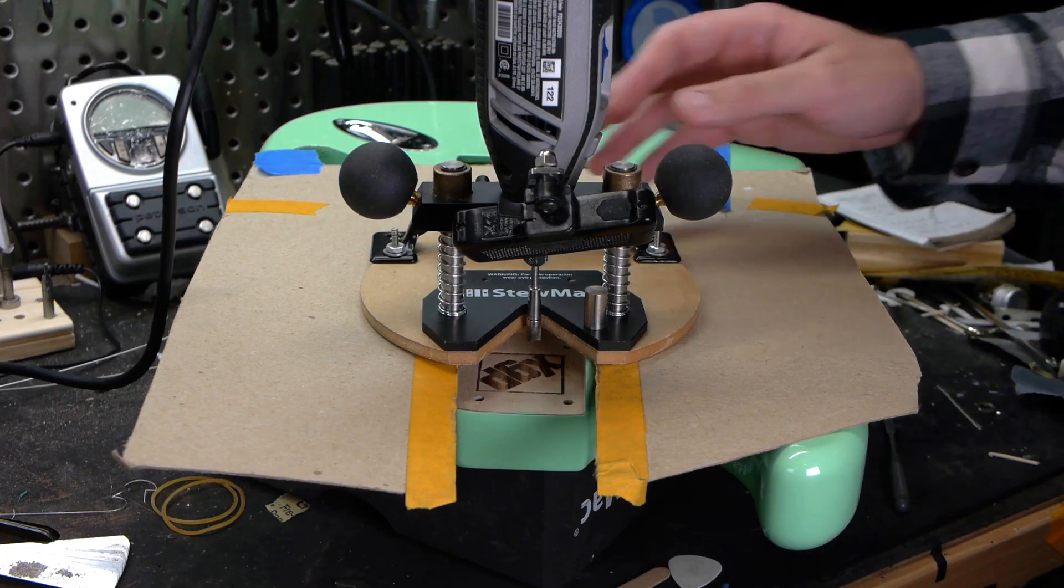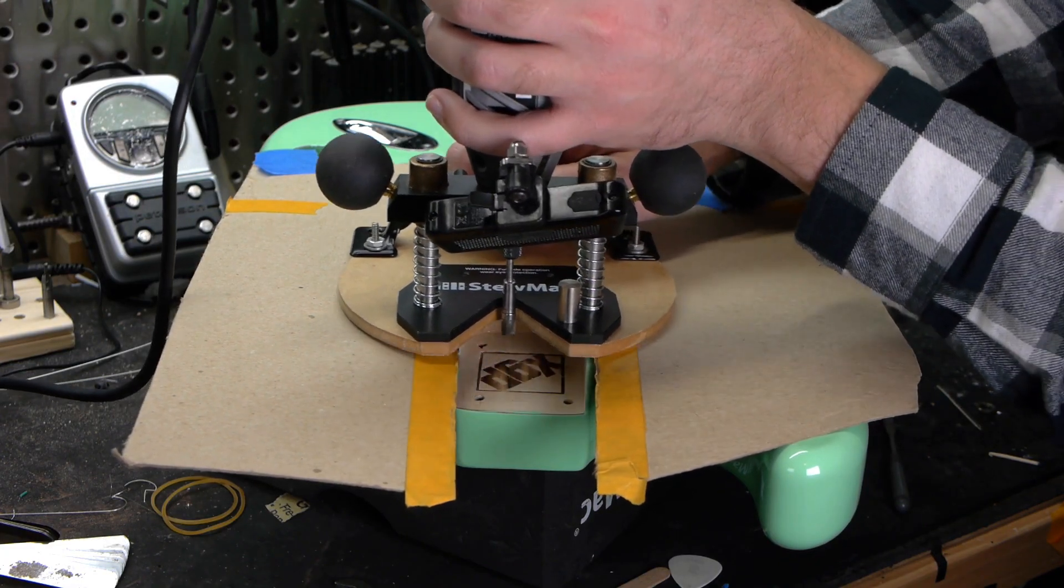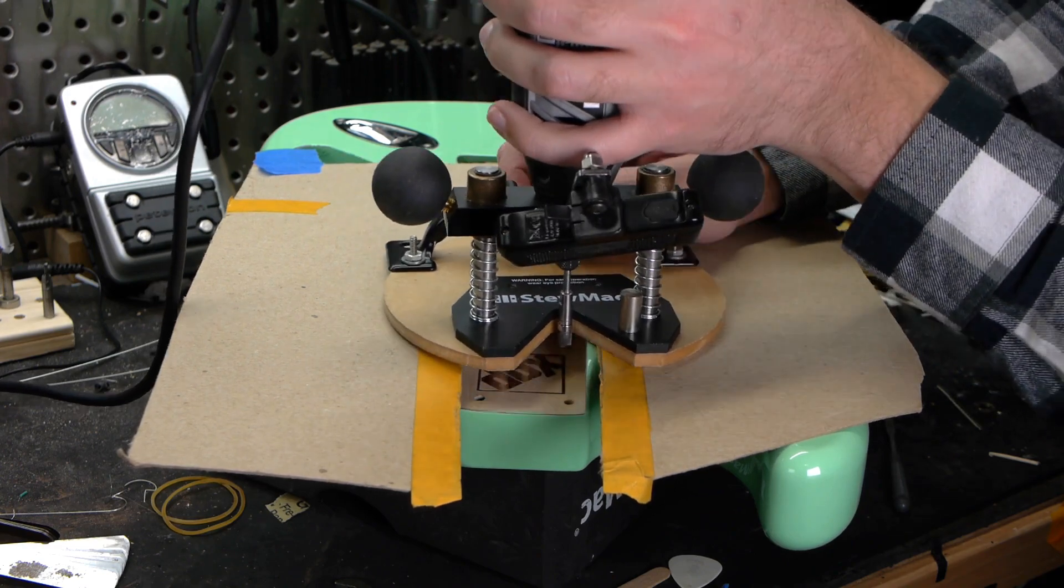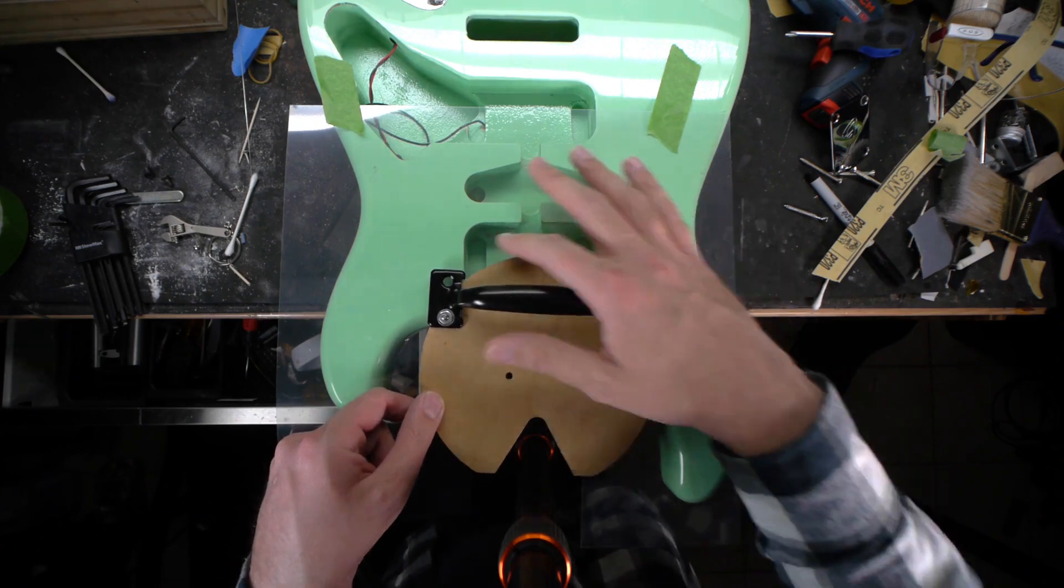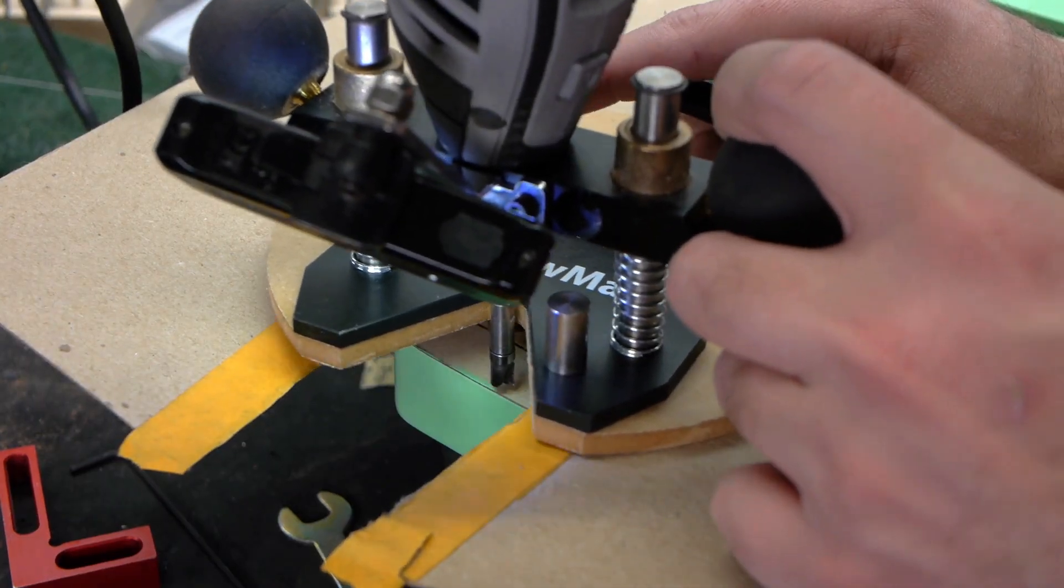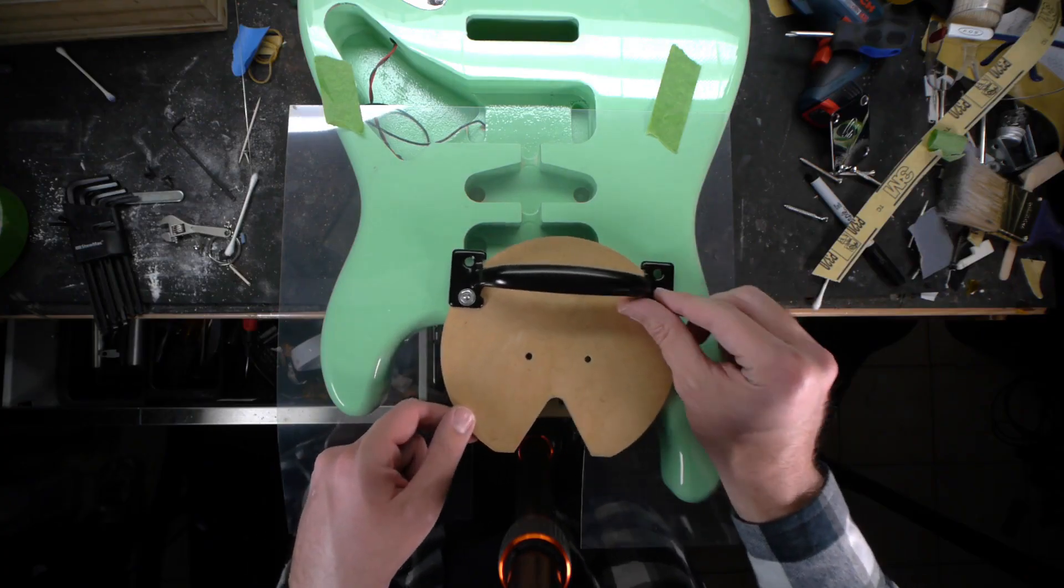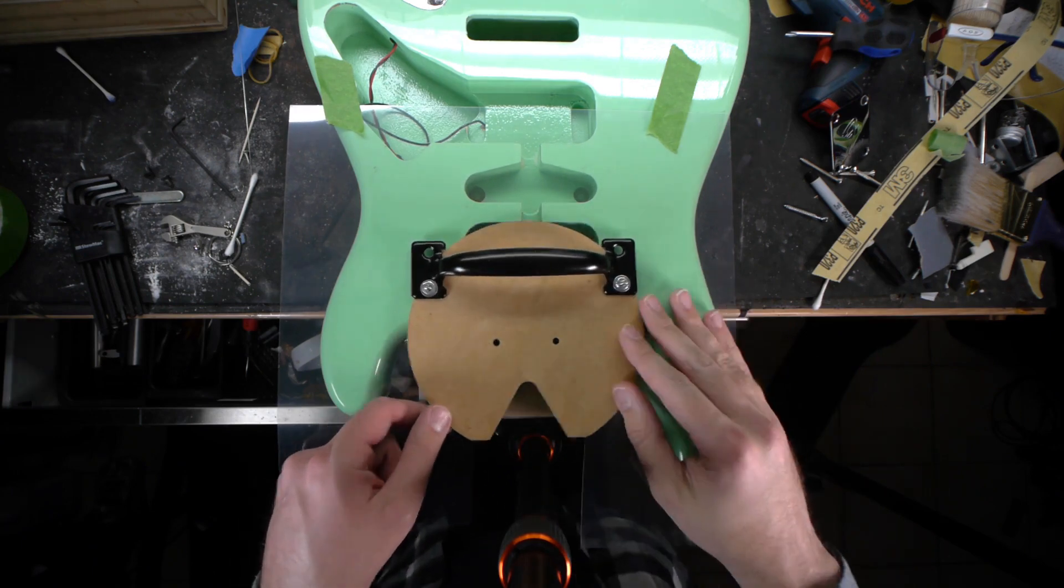You do not want the router tipping forward. You want it completely flat and stable the entire time, and for that we're going to need it firmly planted on the body. It has to be big enough to be in solid contact with the body while at the outer edges of the neck pocket. The base plate is 6 inches in diameter, which is enough to meet those demands comfortably.